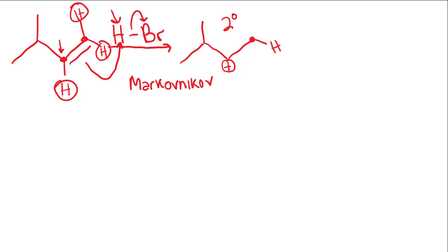Remember that we would rather have a secondary carbocation as opposed to a primary one. This is the very basis of Markovnikov addition — we'd rather have the carbocation on the secondary position. That is the reason that you put the hydrogen where there are more hydrogens, aka the less substituted position. That allows you to form the more stable, more substituted carbocation.